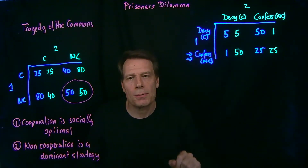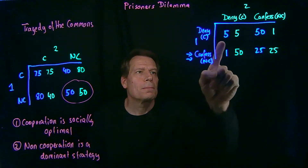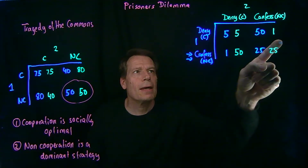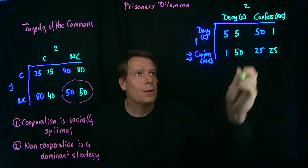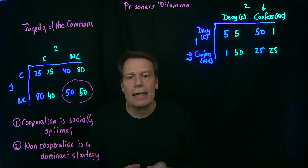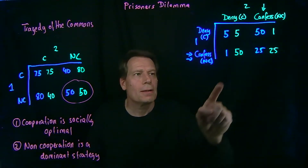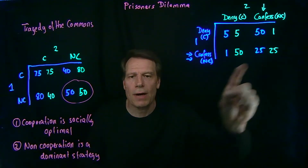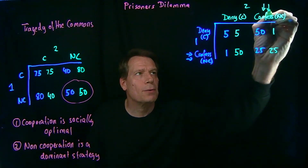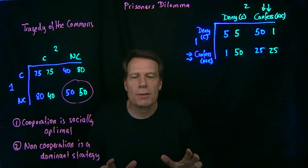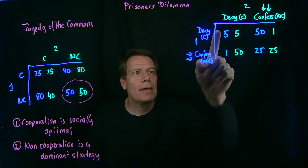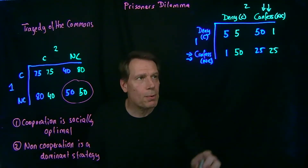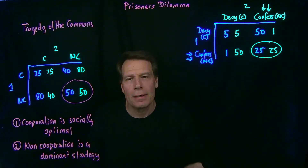The same thing is true for prisoner 2. If prisoner 2 thinks that prisoner 1 is going to deny the murder, then prisoner 2 will choose between 5 years if he denies and 1 year if he confesses — 1 year is better, so he should choose to confess. If he thinks that prisoner 1 is going to confess, then he's choosing between 50 years in jail and 25 years in jail — confessing again gives the better outcome. Confessing is a dominant strategy for both. But between the two of them, it would be much better if they both denied, because they'd only get 5 years in jail, as opposed to the 25 years they're going to get by both confessing.